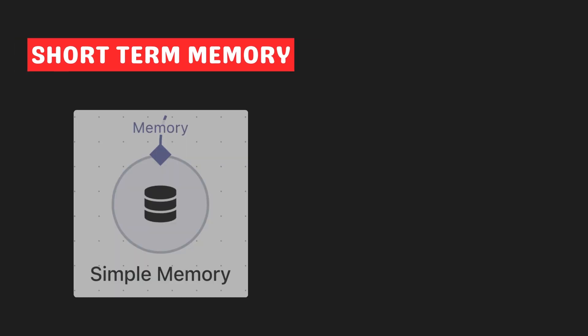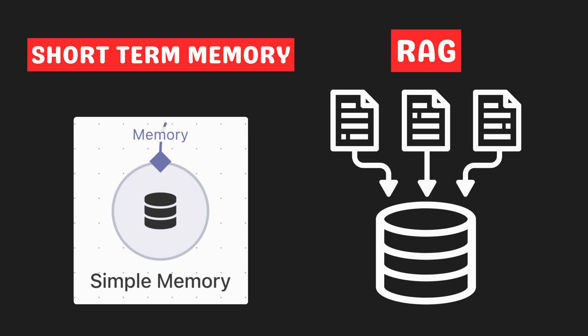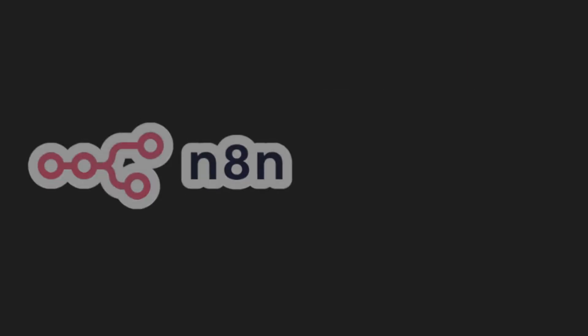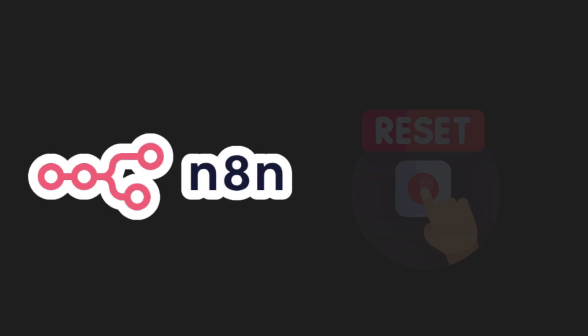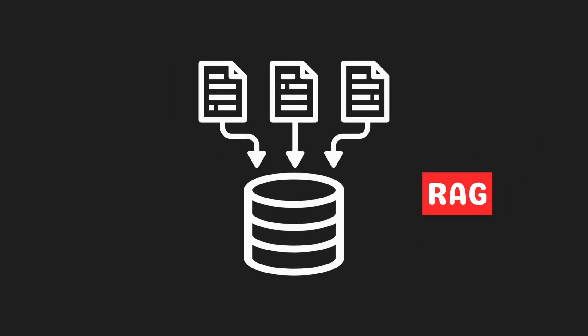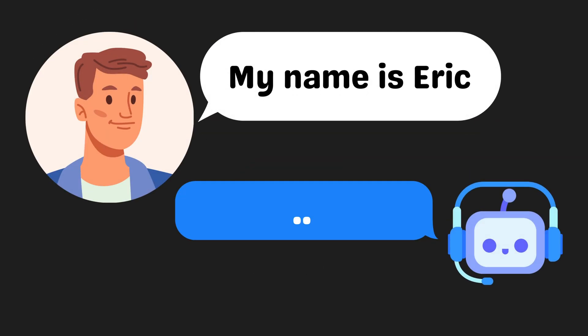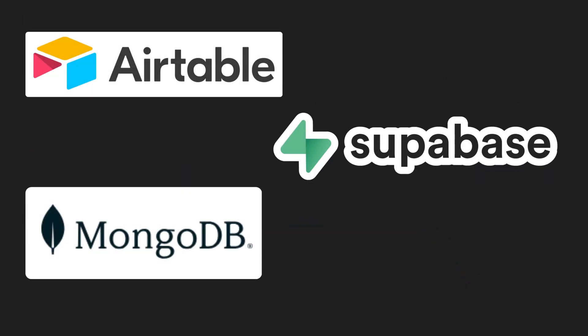You might be wondering why we can't just use short-term memories or something like RAG — retrieval augmented generation. Short-term memories in tools like n8n reset every session, meaning the AI agents will forget as soon as the workflow ends, or if we make a change to the workflow. RAG, on the other hand, pulls info from documents or a knowledge base, but it's not for tracking personalized or user-specific data like a user's name.